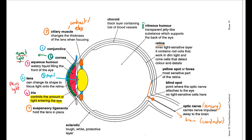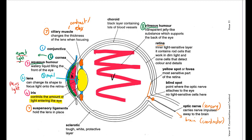Light then travels through the vitreous humor. There's aqueous humor at the front and vitreous humor at the back — an easy way to remember is that they're in alphabetical order from front to back: A then V. The vitreous humor fills the space behind the lens and maintains the shape of the eye, keeping the retina pushed flat against the back.